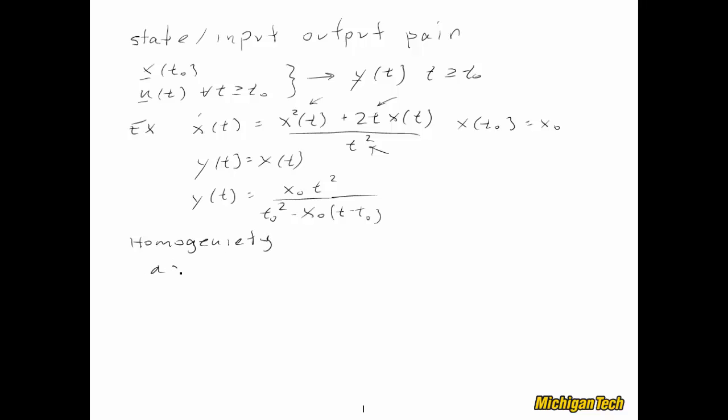So here's homogeneity. We have alpha, some scalar constant, times x(t0), and alpha times u(t). And the question is, does that give us alpha times y(t)? Or y(t) is the output due to the initial state x and the input u. So here's our check. What we'll do is just take this solution and replace every occurrence of x0 with alpha times x0. Now notice that there's no u(t) in this particular example, so we really don't have to worry about that part of it. But I'll keep writing it just to be consistent. So here we go. Alpha x0 times t squared divided by t0 squared minus alpha x0 times the quantity t minus t0. And the question is, is that equal to alpha times the quantity x0 t squared, t0 squared minus x0 t minus t0.